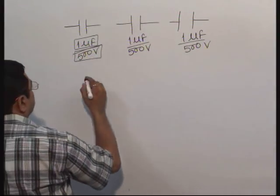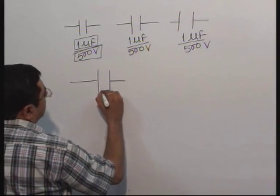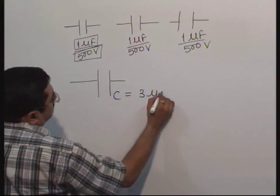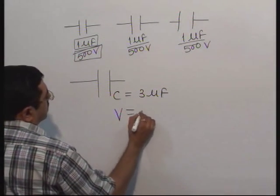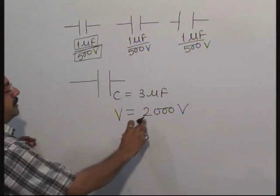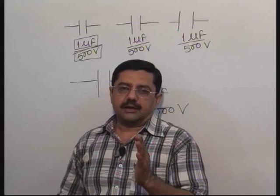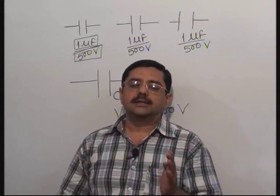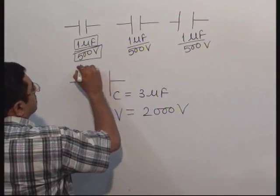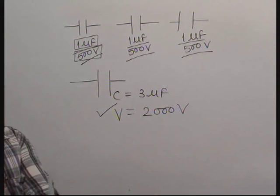So, many capacitors are given. You have to make a combination of these capacitors using series or parallel arrangements, so that you get a total capacitance of 3 microfarad and the maximum potential that can be applied across this combination is 2000 volt. I am explaining the normal method first, then I will give you a wonderful shortcut formula. Simply, you should first satisfy the voltage condition — that is 2000 volt.